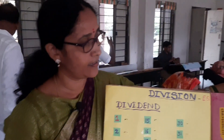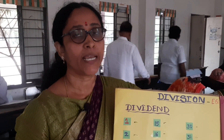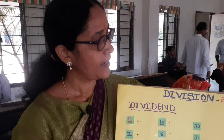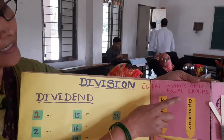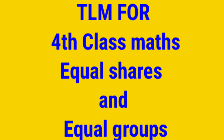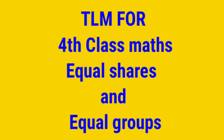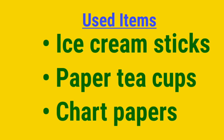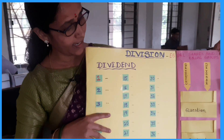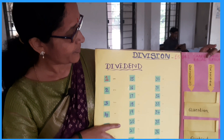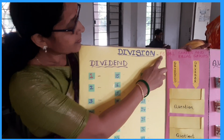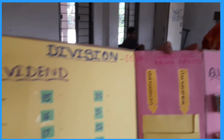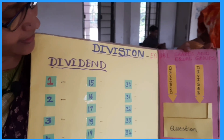This is the 4th class math, page number 130. Equal shares and equal groups. This is a division TLM on equal shares and equal groups. We take a question first.